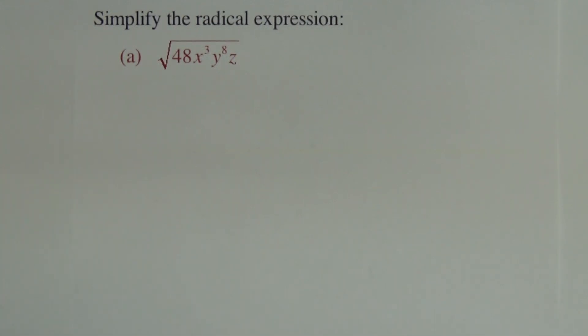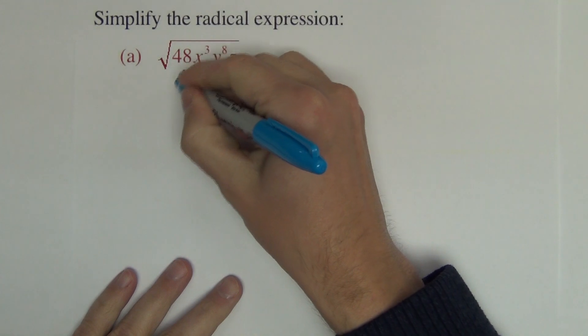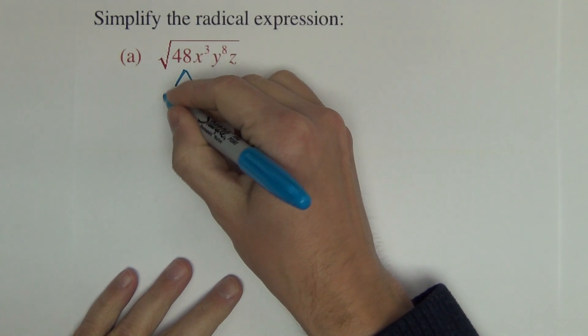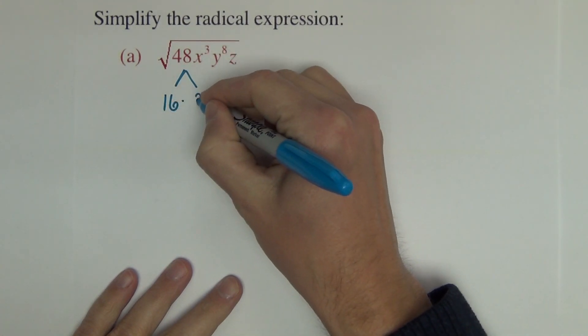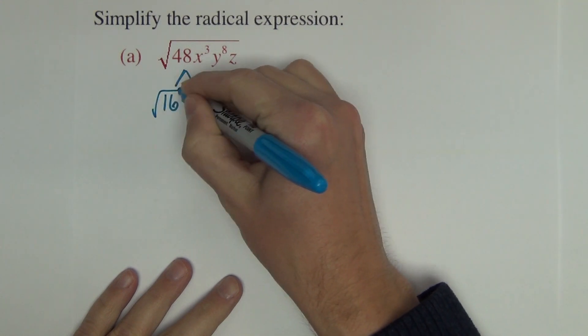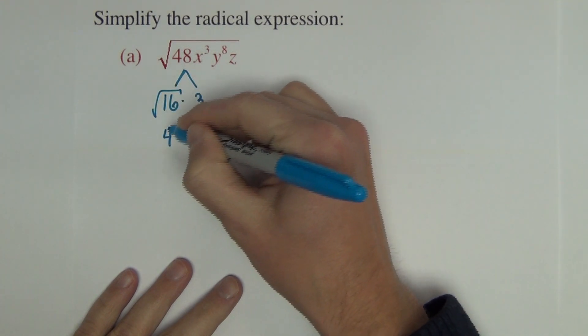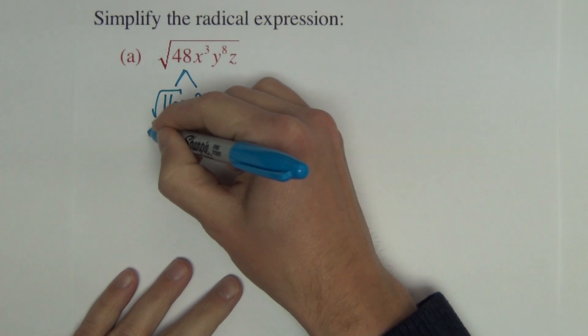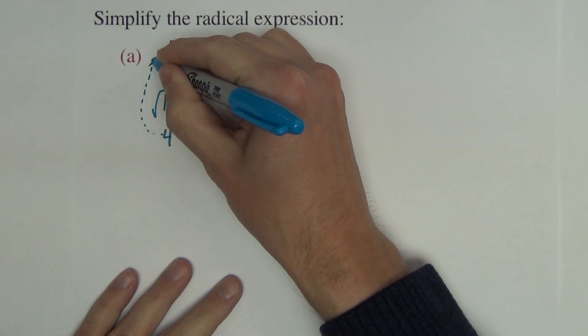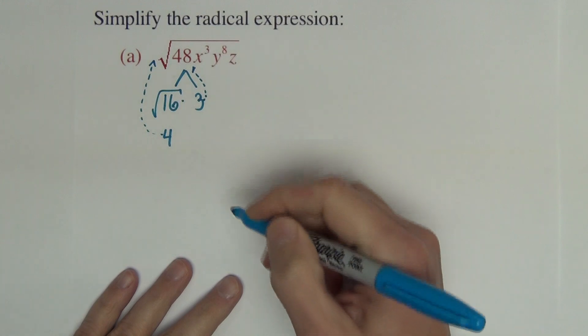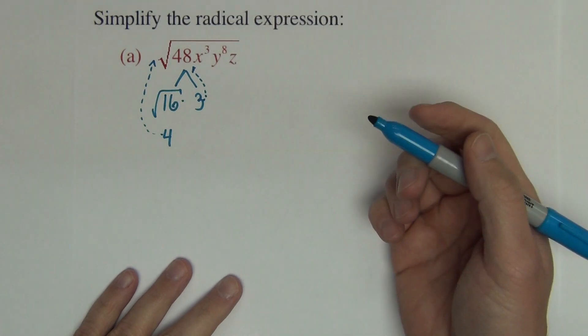Alright, simplifying the radical expression, we have a square root. The 48, I need to break down into two numbers that multiply to 48. So I might use 16 times 3, square root of 16 being 4. So the 4 is going to come on the outside of this. The 3 is going to stay back underneath as we can't square root the 3.